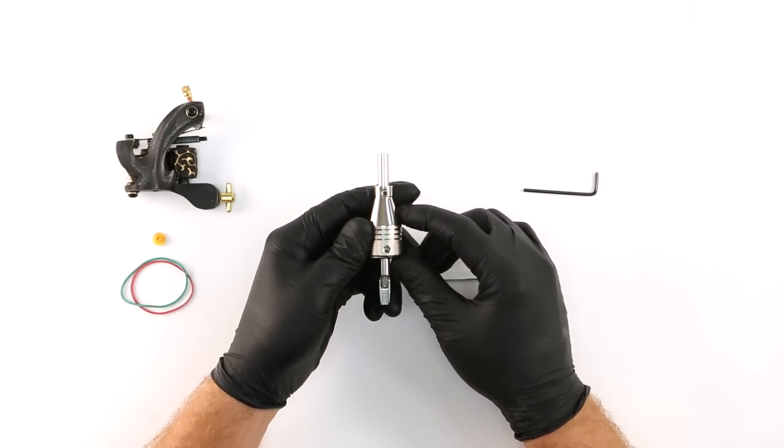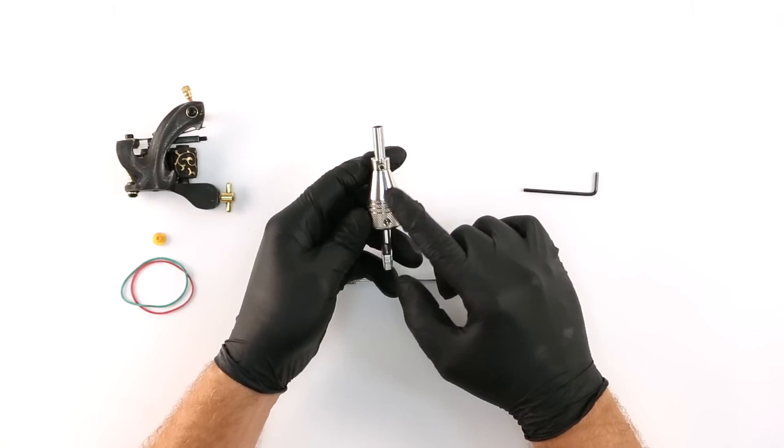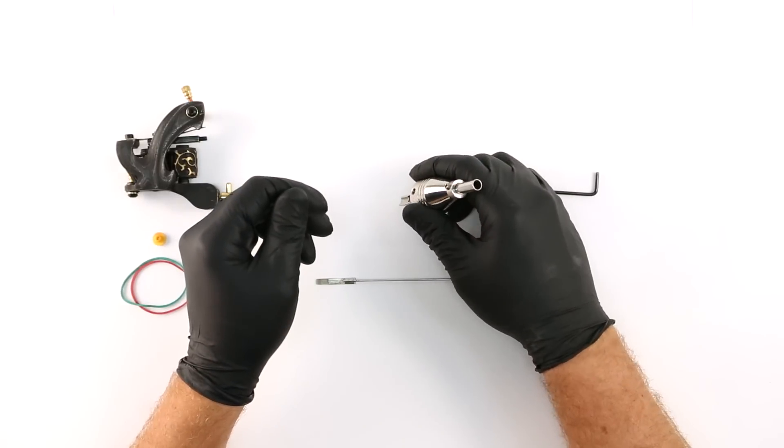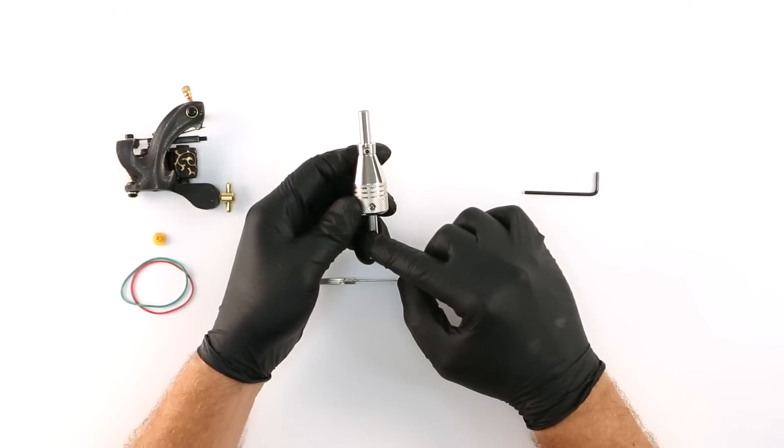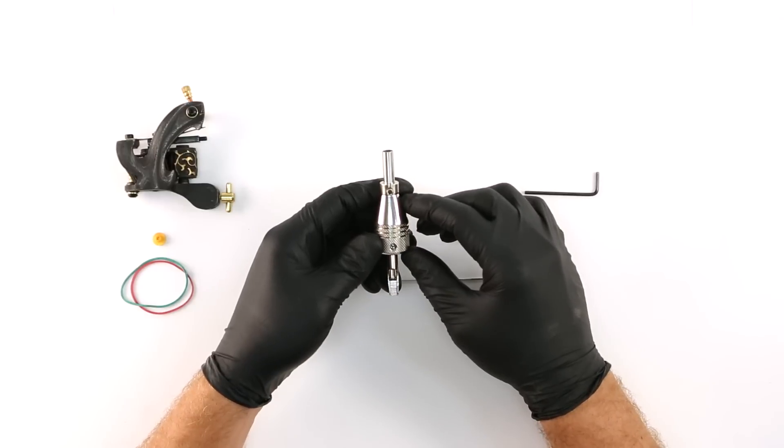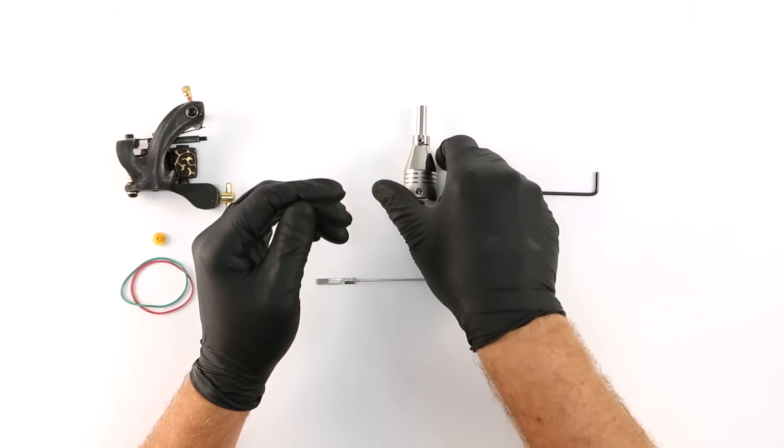If the screws protrude like they do on this grip, you should try to align the screws in a fashion so there's no risk of you potentially ripping your glove. Here we have the screws lined up nicely with the opening in the tip, which will orient them in between and away from my fingers. During use this minimizes the risk of a glove tear.